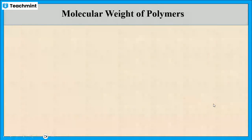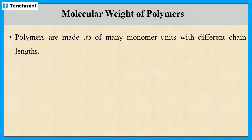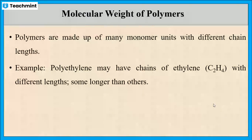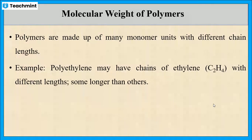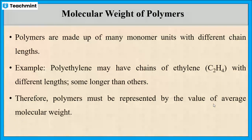But we cannot calculate the molecular weight of a polymer in the similar manner, because polymers are made up of many monomer units with different chain lengths. For example, polyethylene has a repeating unit of ethylene. However, in the same sample, some chains have 100 units, some other chains have 150 units, and so on. Therefore, the molecular weight of a polymer is usually represented by the value of average molecular weight.